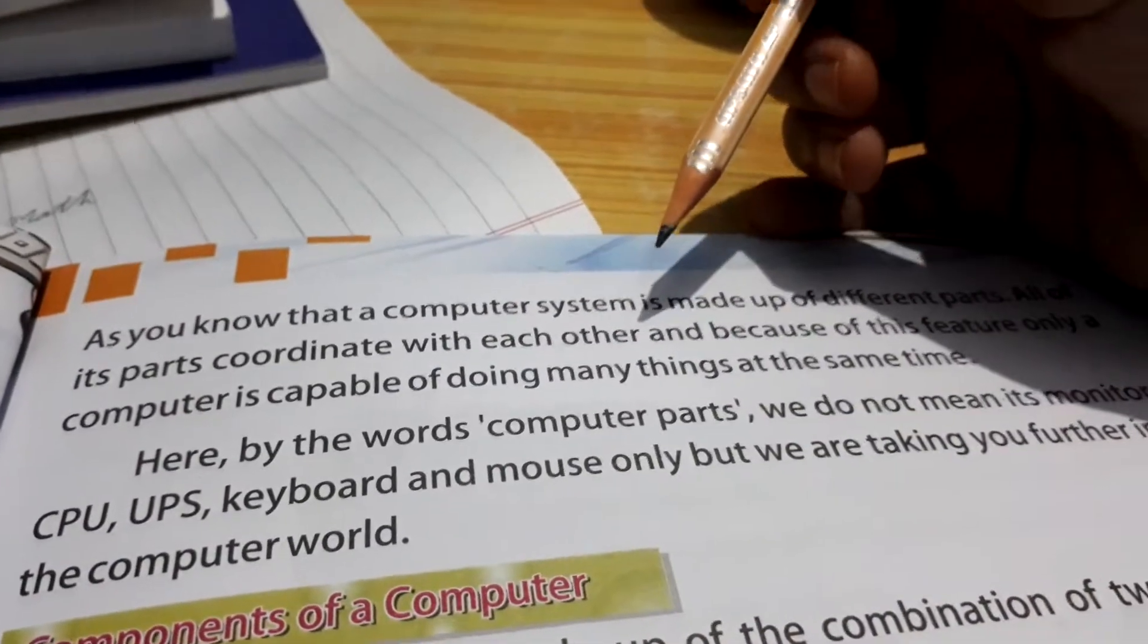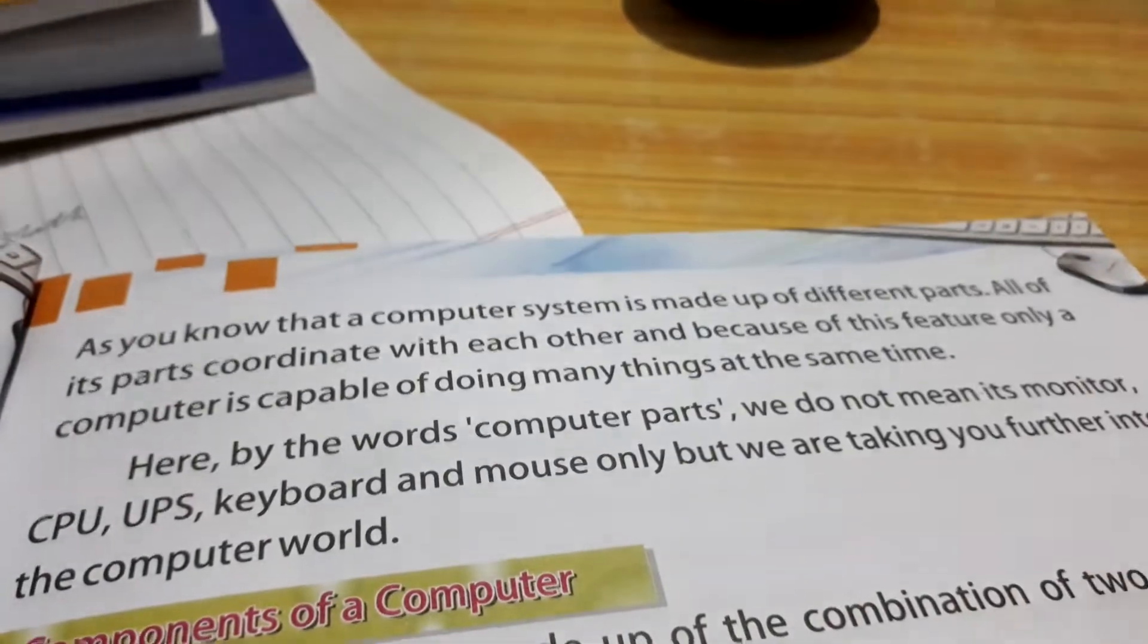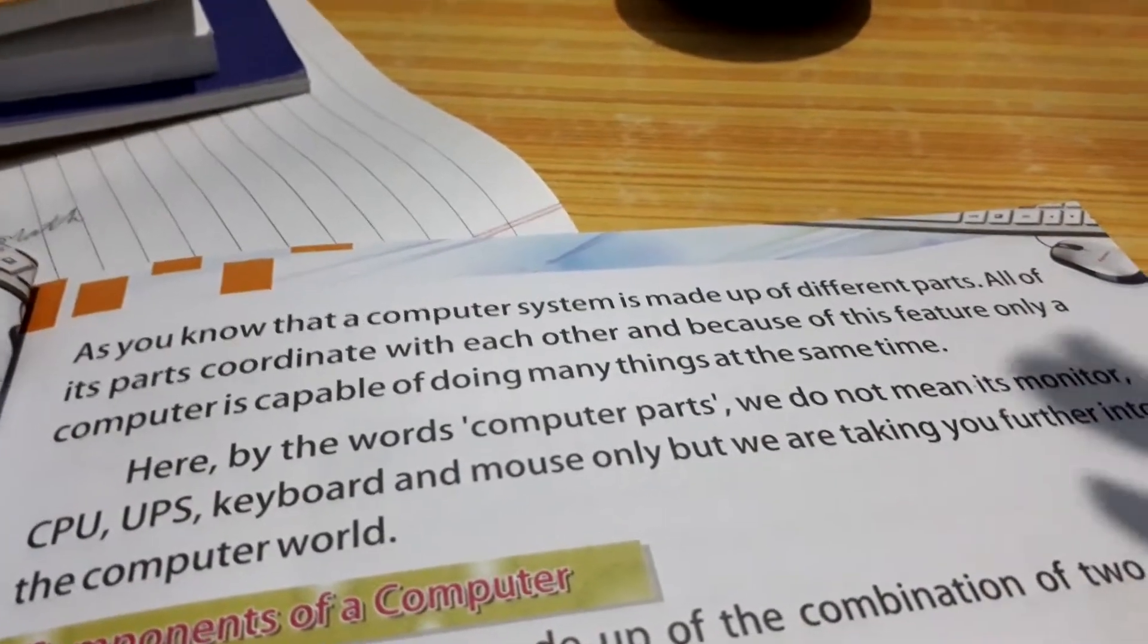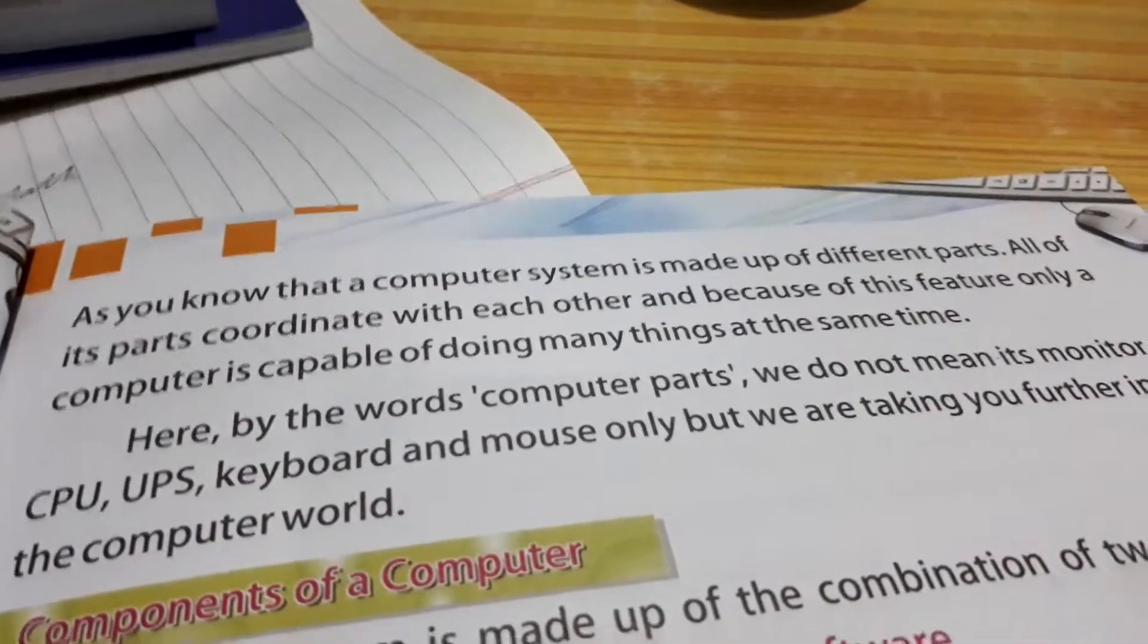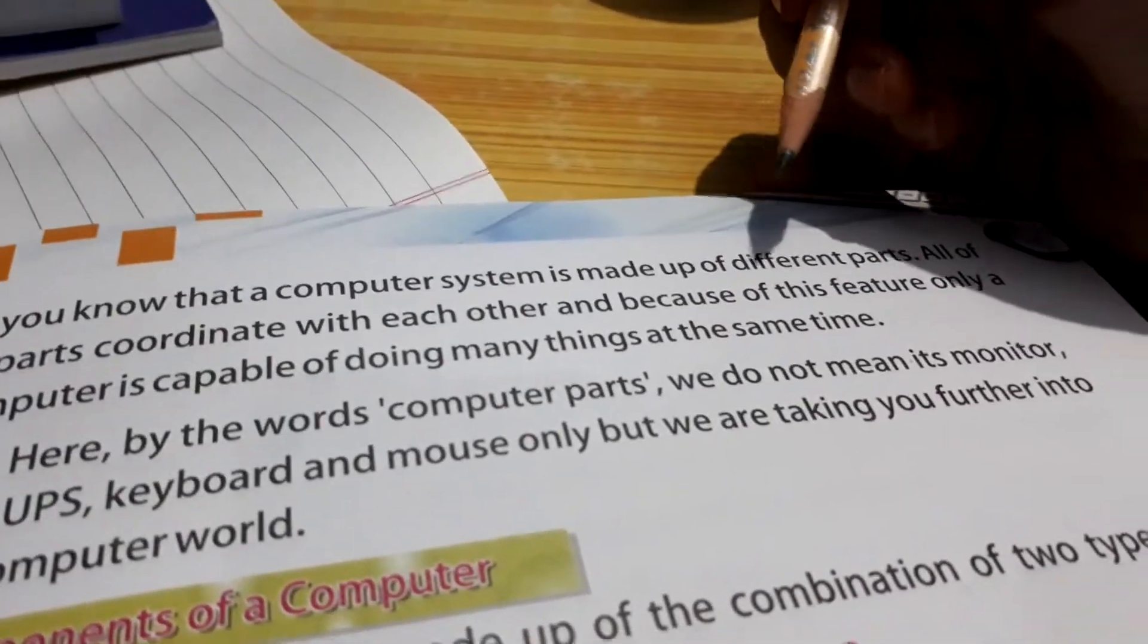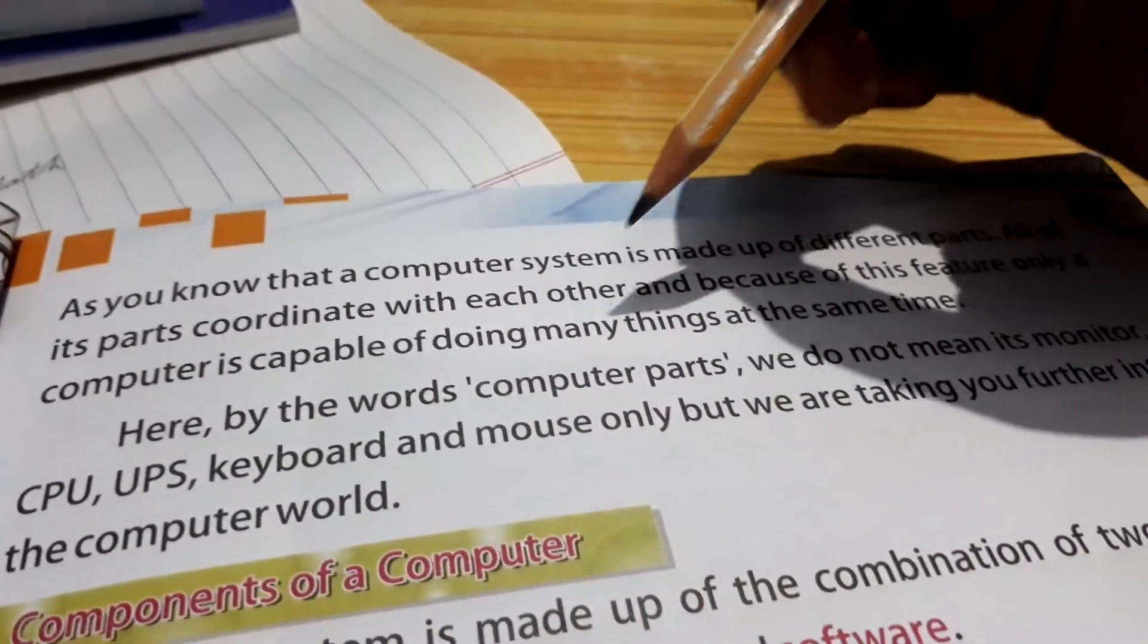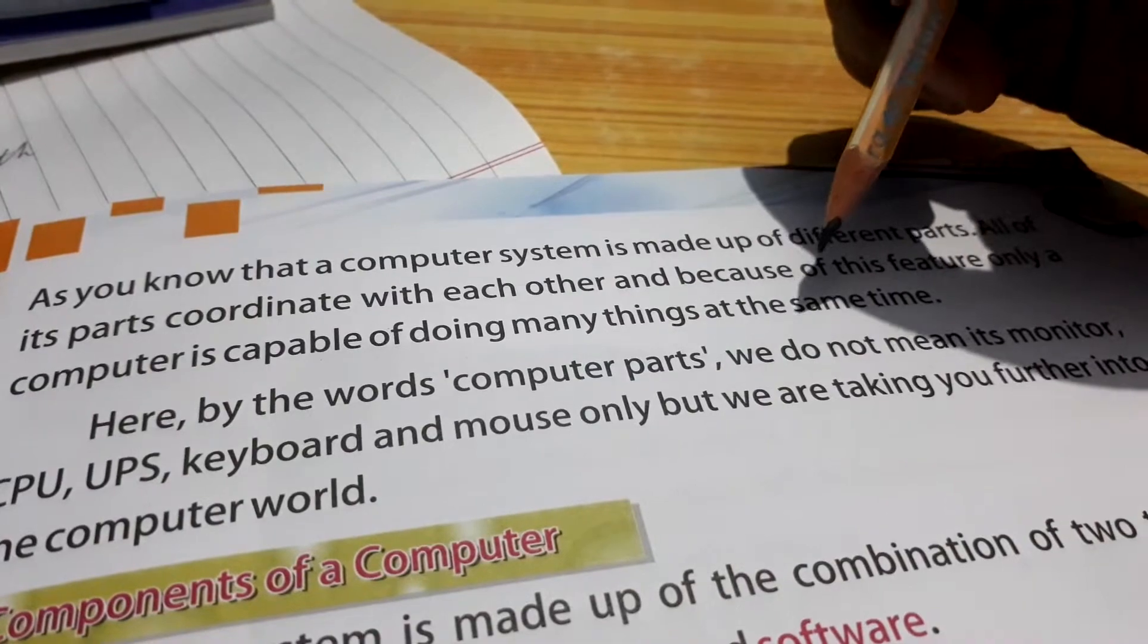So all of these parts coordinate with each other. Just like when we speak, our mouth, eyes, face, hands all coordinate. When we walk, our legs and hands coordinate together. And because of these features only, a computer is capable of doing many things at the same time.